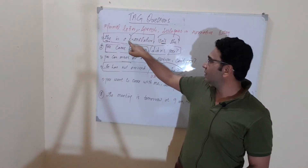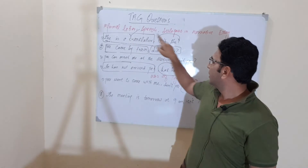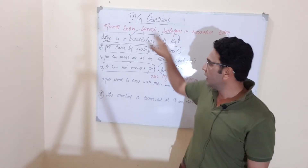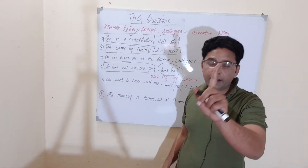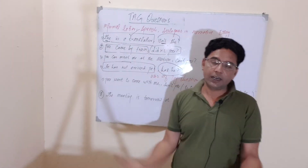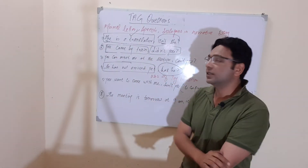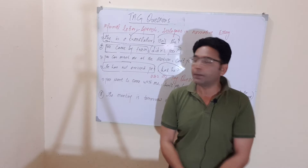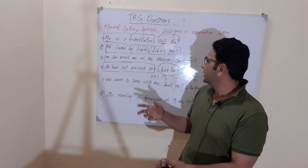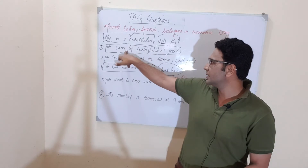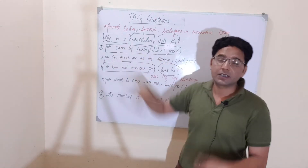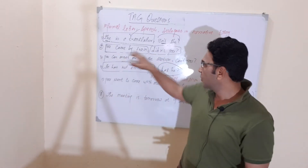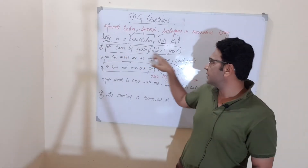Whatever the first part of the sentence is, the tag question should be the opposite. If the first part is positive, the tag must be negative interrogative; if it is negative, the tag must be simply interrogative. For example: 'You came by train, didn't you?' This is simple past, so the helping verb in the tag is also taken from simple past.